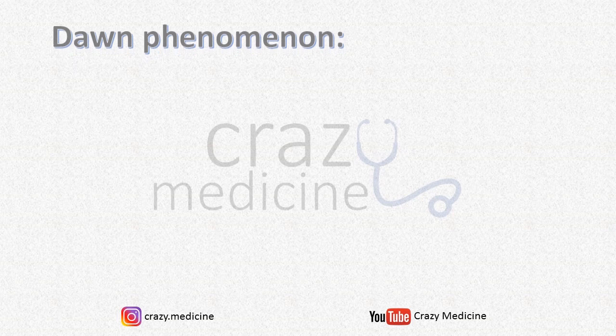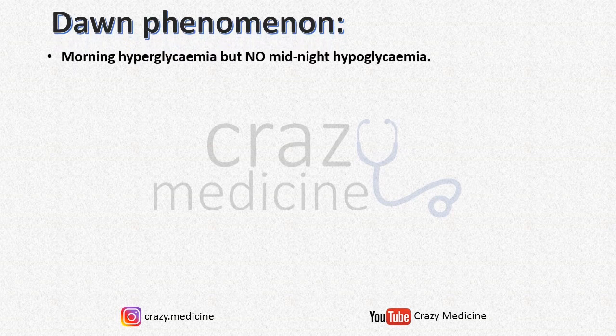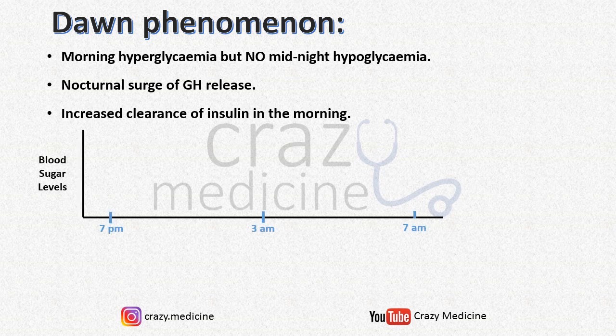Next is Dawn Phenomenon. As we discussed, both phenomena have morning fasting hyperglycemia, but in Dawn Phenomenon there is no midnight hypoglycemia. The reason for Dawn Phenomenon is a nocturnal surge of growth hormone release, or increased clearance of insulin in the morning.